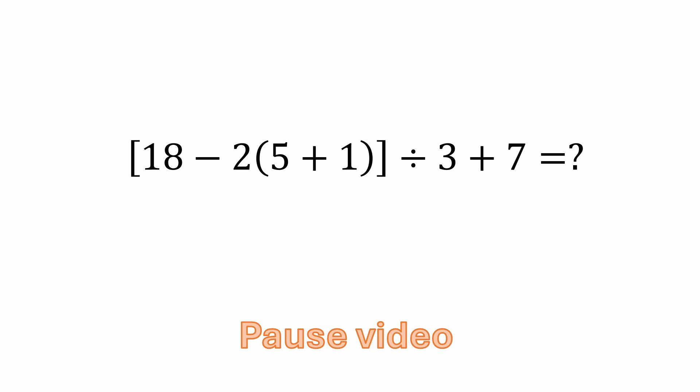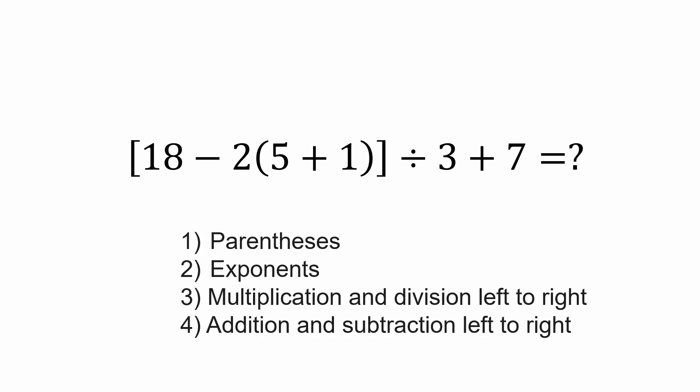All right. So we have 18 minus 2 times the quantity 5 plus 1. And then we have outer brackets here. And then everything in those outer brackets is divided by 3. And then we're adding 7. So, if you'd like to pause the video here, we'll come back and work it together.